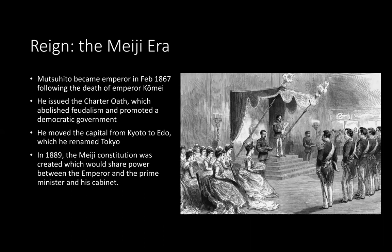Mutsuhito became emperor at the beginning of the Meiji era, following the death of Emperor Komei in February 1867. He issued the Charter Oath, which abolished feudalism and promoted a democratic government in Japan. He also replaced the old capital of Kyoto with Edo, which became named Tokyo. In 1889, the Meiji Constitution was created, under which the emperor, the prime minister, and the cabinet would share power, giving the emperor considerably more power, though he was still subject to an elected government. The image shows the Meiji emperor reading the Charter Oath to parliament.